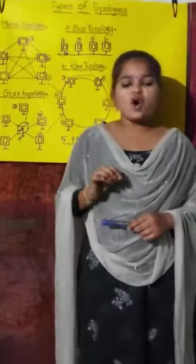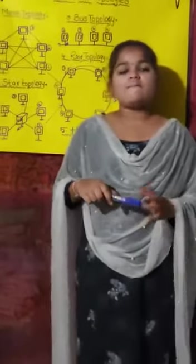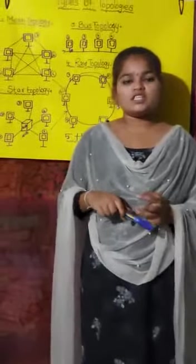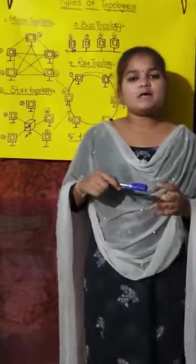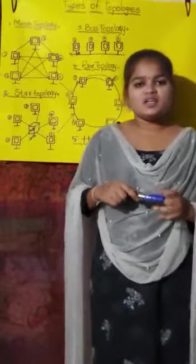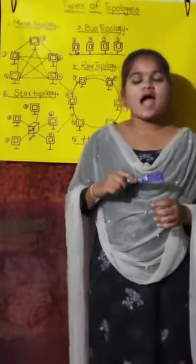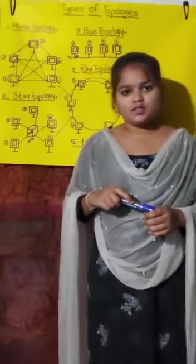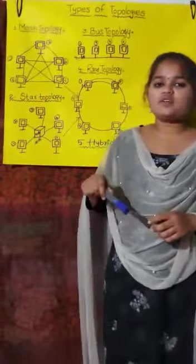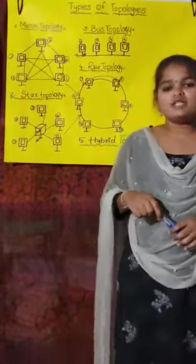What is topology? The geometric representation of how the systems are connected to each other is known as a topology. Topologies are five types: mesh topology, star topology, bus topology, ring topology, and hybrid topology. Let's discuss about the first — mesh topology.